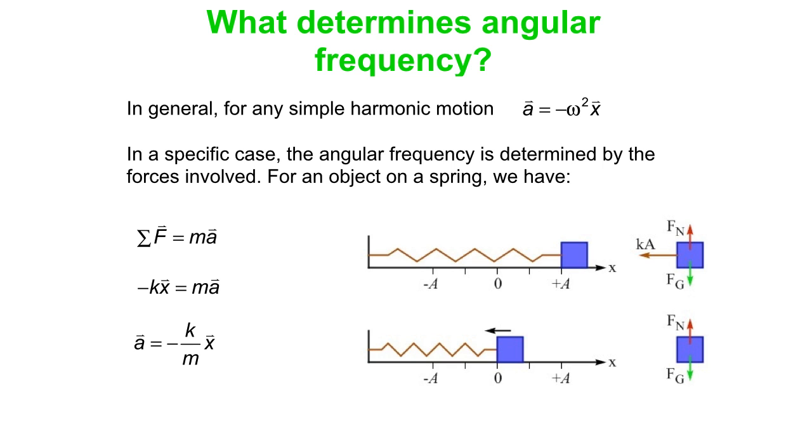In this case we get minus kx equals ma, and so a is minus k over m times x. So we compare that to our general equation a equals minus ω²x, and we can see that ω² is therefore k over m, or in other words omega is root k over m. So for a block on a spring, the angular frequency is the square root of the spring constant divided by the mass. That makes some sense, right? The stiffer the spring, the faster it's going to oscillate, and the heavier the block, the slower it's going to oscillate.